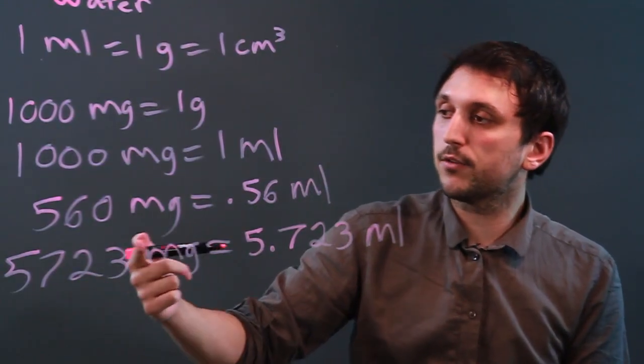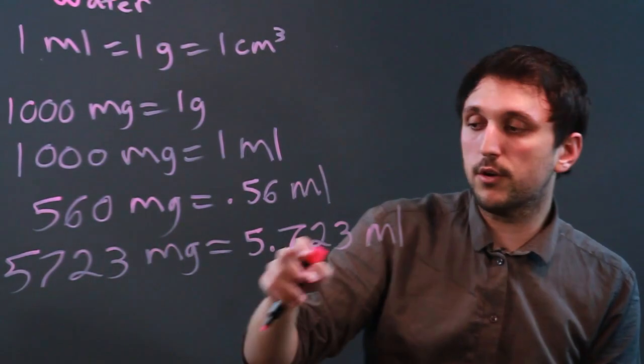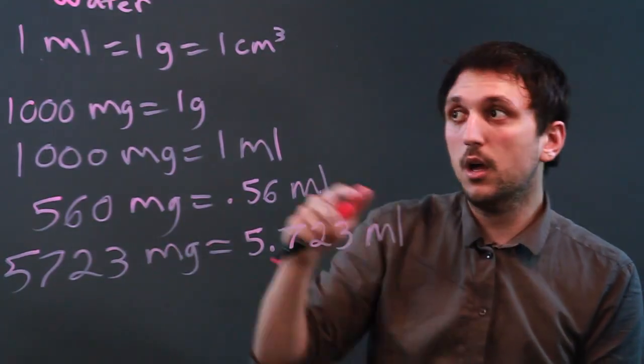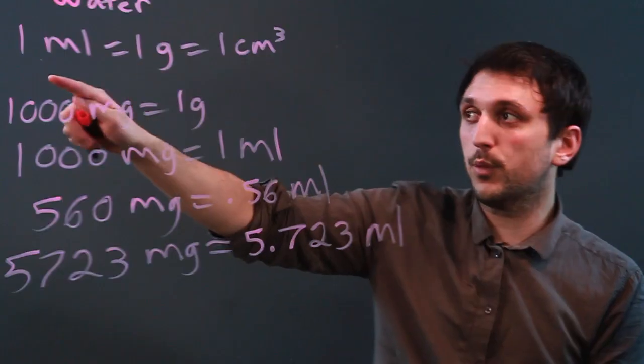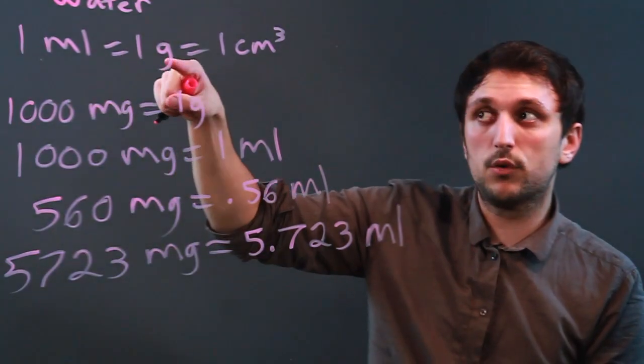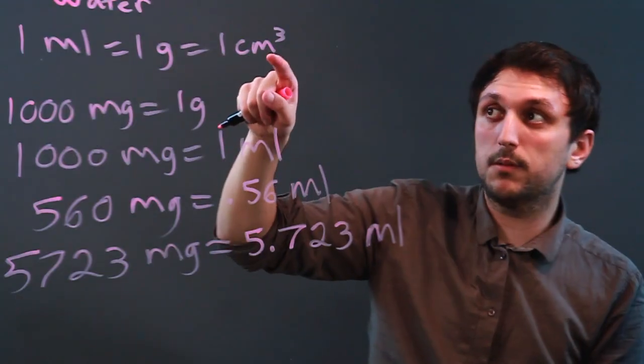And again, if you're saying milligrams and milliliters, you might get confused because of the prefix milli and milli, but always remember this conversion with water. One milliliter equals one basic gram equals one centimeter cubed.